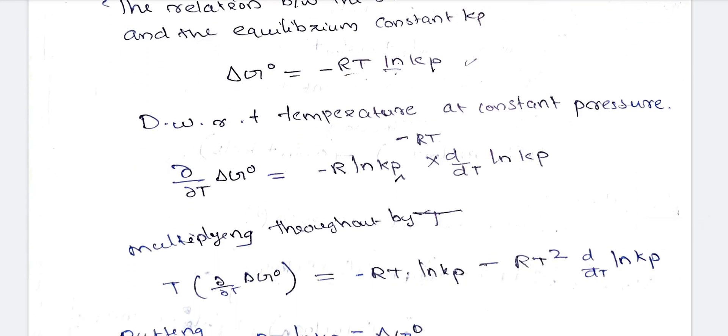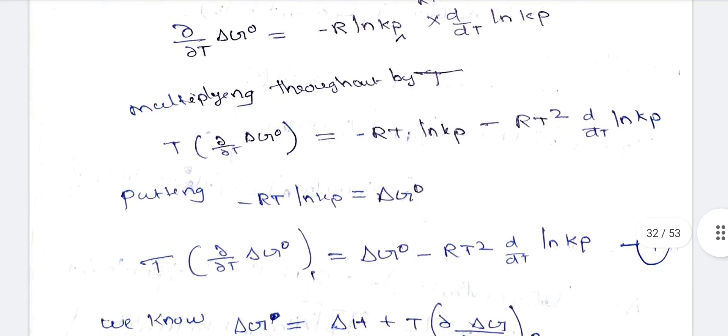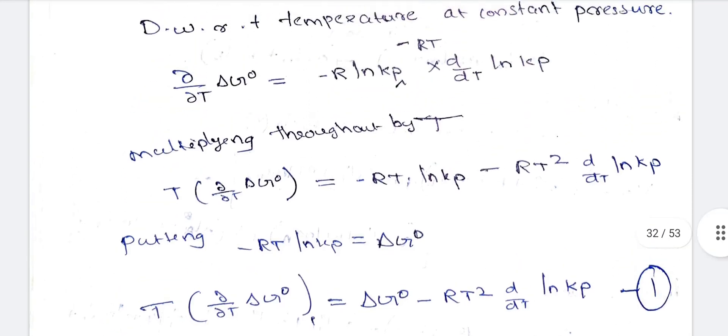Differentiating delta G° = -RT ln Kp using the product rule gives: d(delta G°)/dT = -R ln Kp minus RT times d(ln Kp)/dT.